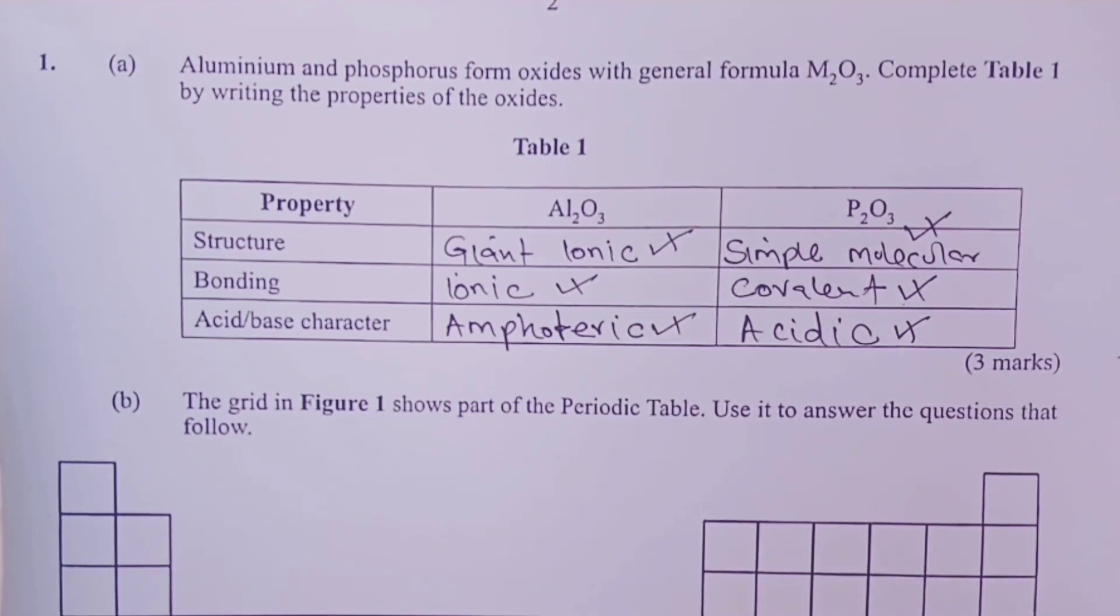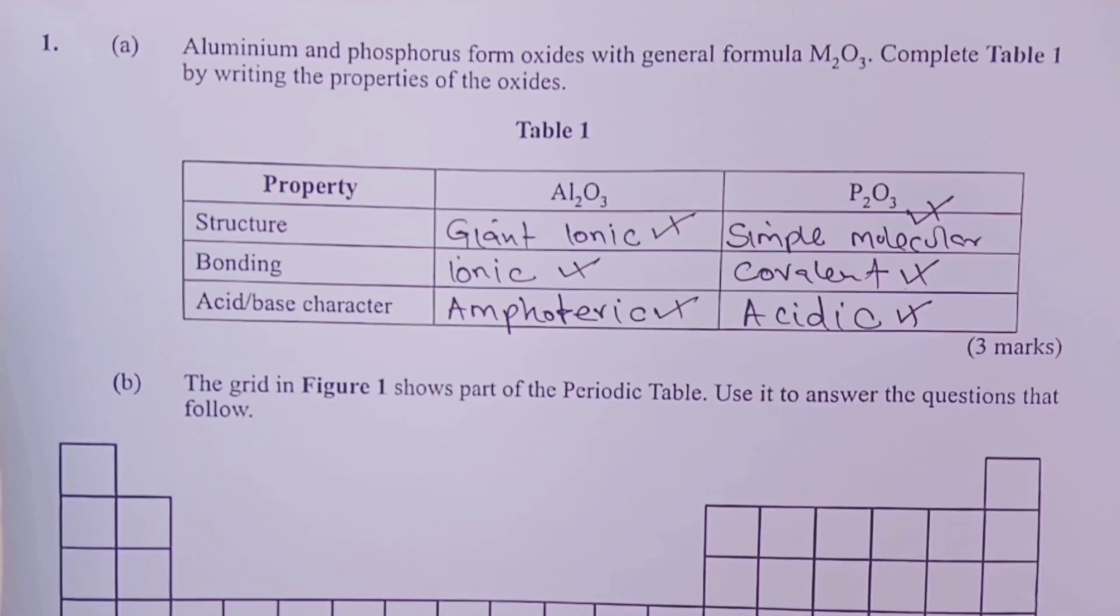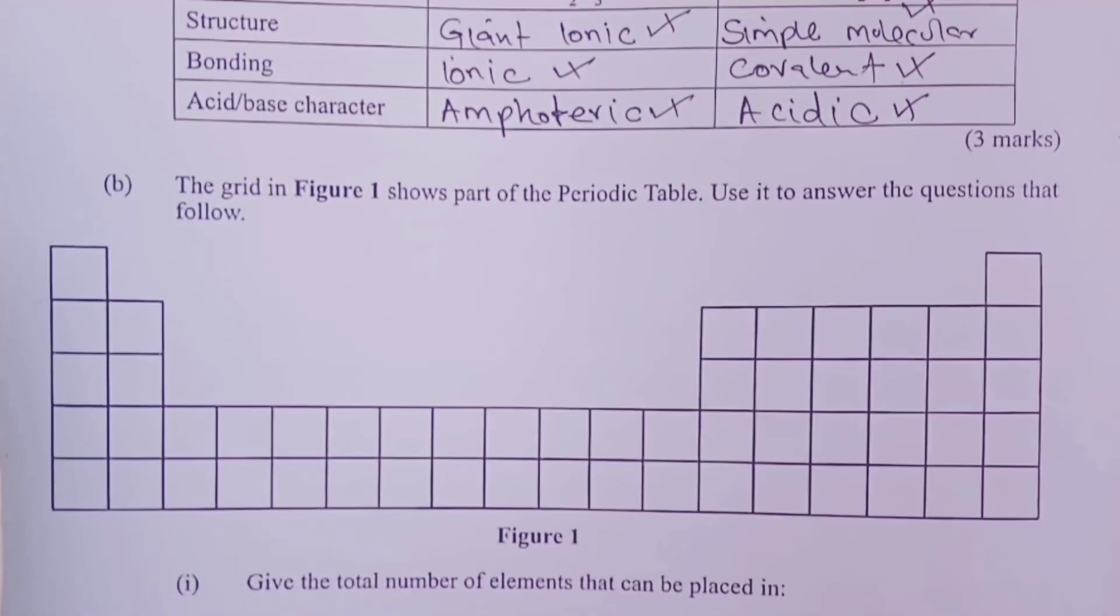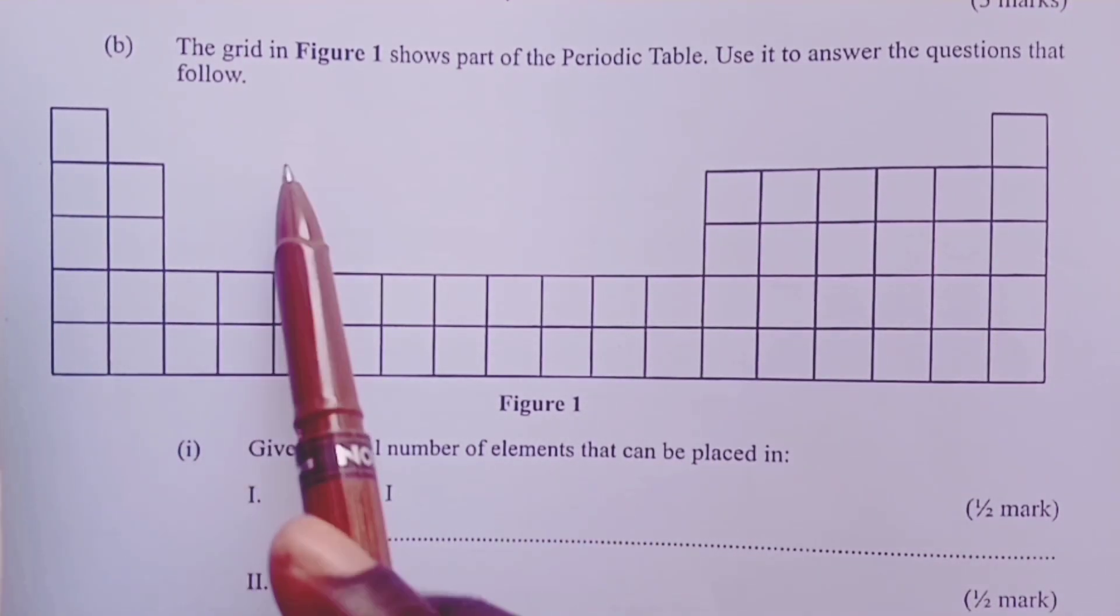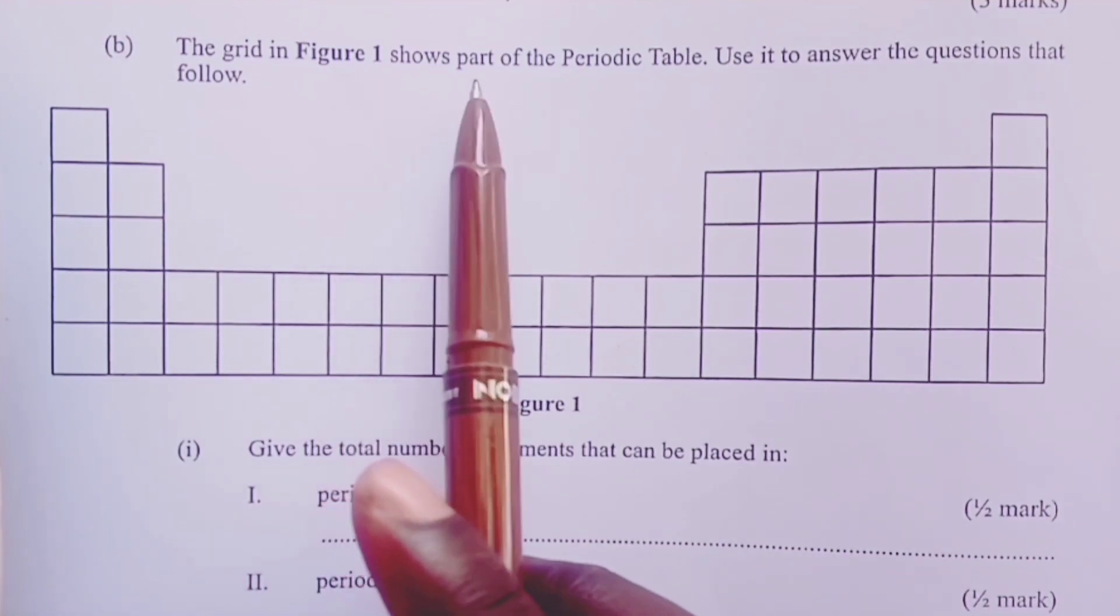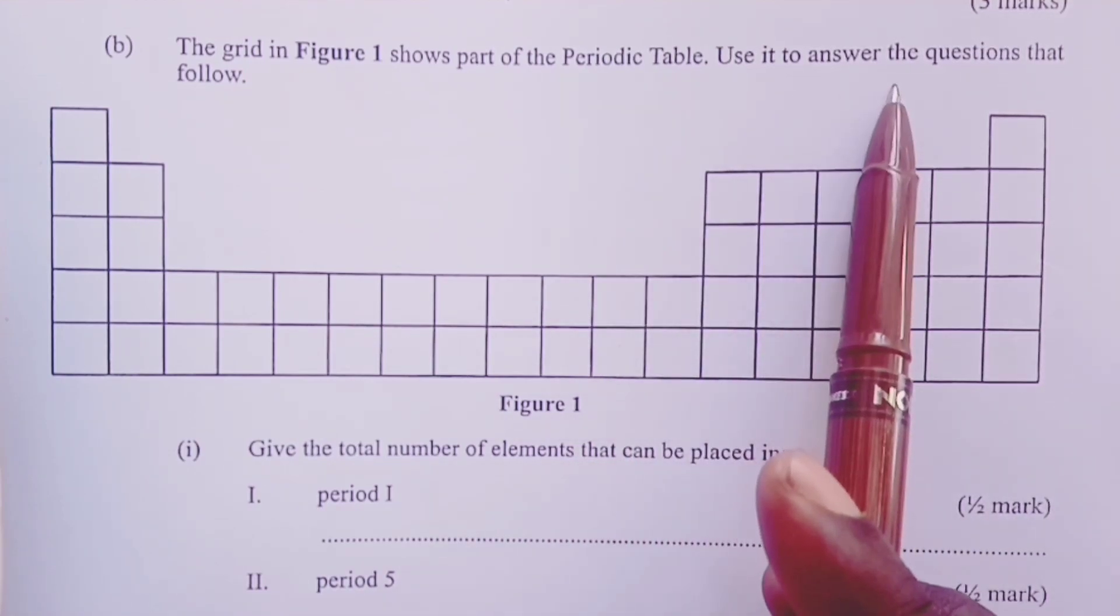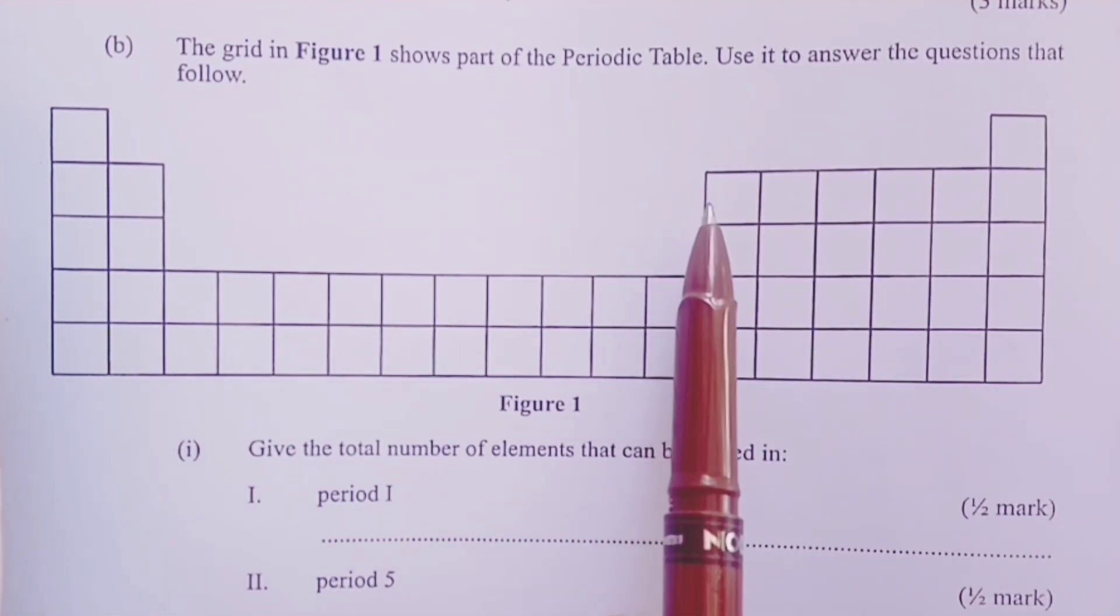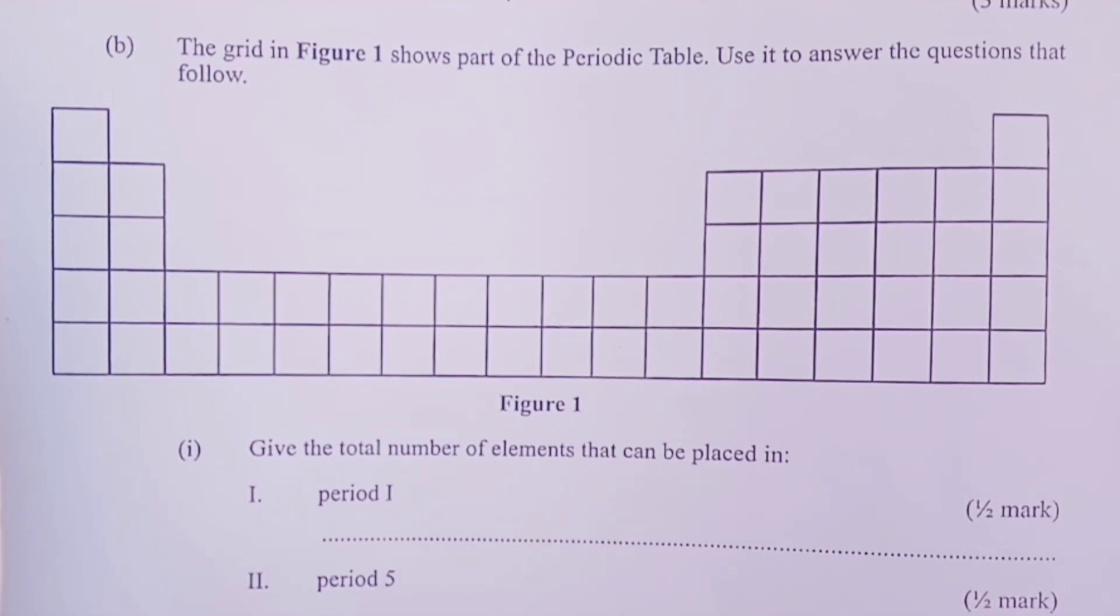To now part B, which tested on the general understanding of the grid. This grid is what we usually call the periodic table in chemistry. The grid in figure 1 shows part of the periodic table. We are asked to use it to answer the questions that follow.